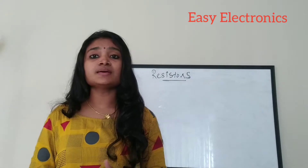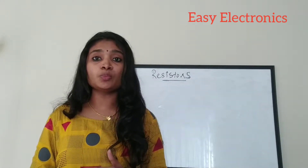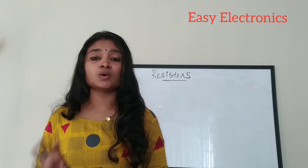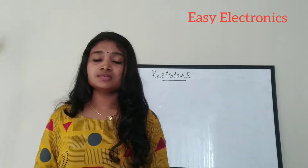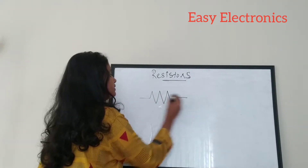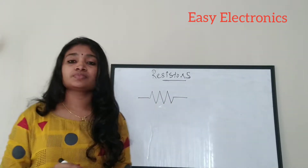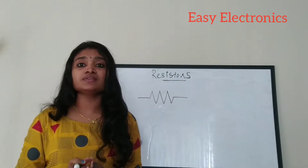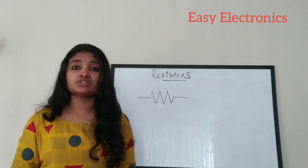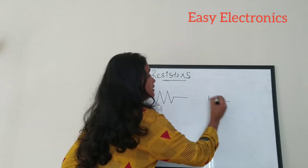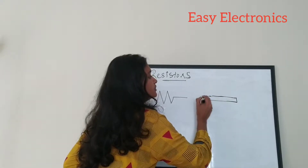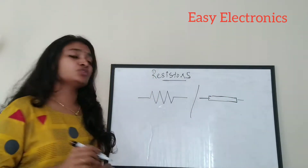A resistor is a passive electronic component which is used for opposing the flow of current. When a current flows through a conductor, in order to give resistance or opposition, we use a resistor. A resistor is denoted using a specific symbol in electronic circuit diagrams. It also has an alternate representation using a rectangle, with the value of the resistor written inside.